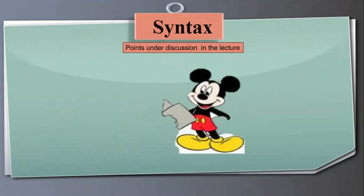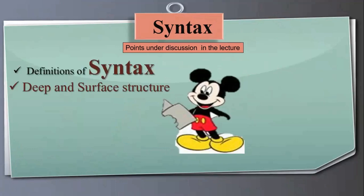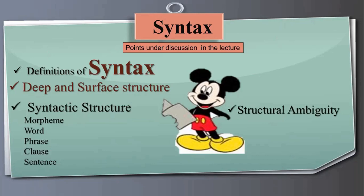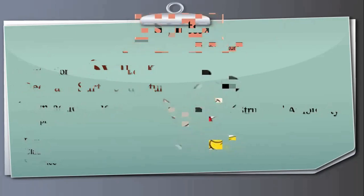The major points we are going to discuss: number one, definitions of syntax — we have already discussed this but we are repeating it. The most important and new topic in this lecture is deep and surface structure. Secondly, we will cover syntax structure, in which morphemes make words, words make phrases, and phrases make clauses and sentences. At the end, we will discuss structural ambiguity in syntax.